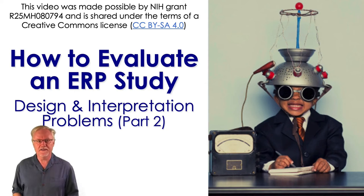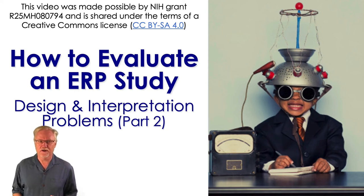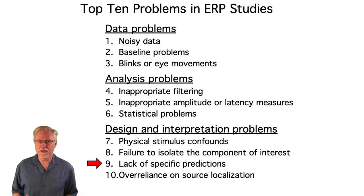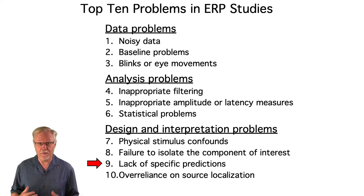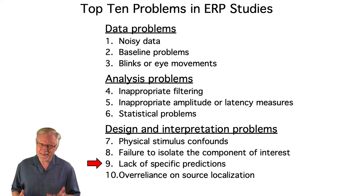Now we're going to move on to some problems with how a study is framed in a journal article. The first problem is quite simple: if the introduction of an ERP paper doesn't include a concrete description of what patterns of ERP results would be predicted by the hypotheses being tested, then that's a big warning sign.